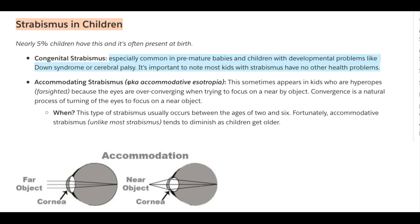Accommodative strabismus, also known as accommodative esotropia. As we learned in the previous lesson, accommodation is a natural process for farsighted people to focus on an object. In this lesson, we'll learn about another natural process: convergence. Accommodative strabismus happens in kids who are hyperopic — farsighted — because their eyes are over-converging when trying to focus on a nearby object. Convergence is the natural process of turning the eyes inward to focus on a near object.